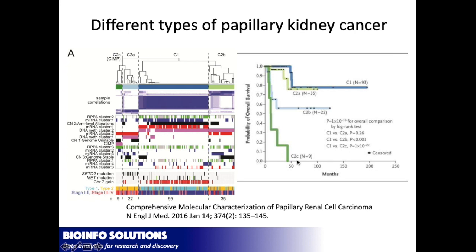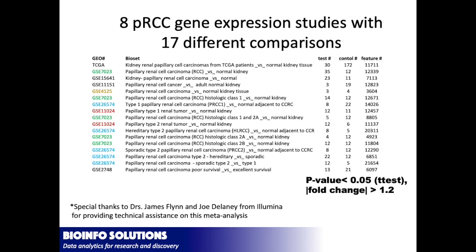My goal was: how can I go out there and get as much information as I can on papillary renal cell carcinoma and come up with something that can actually help an oncologist treating the disease? So what I did was put together a meta-analysis using 8 different papillary renal cell carcinoma studies, looking at 17 different comparisons. Here are all the numbers of test subjects — the ones that would have the cancer — what it was compared to, the control tissues, and the number of genes that were differentially expressed. This is my base to work with.